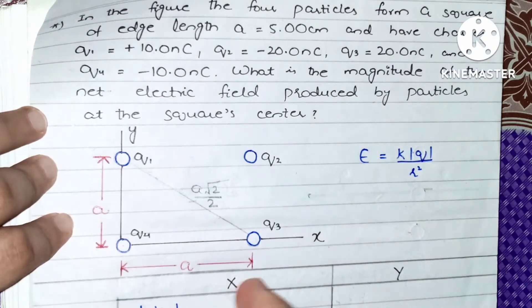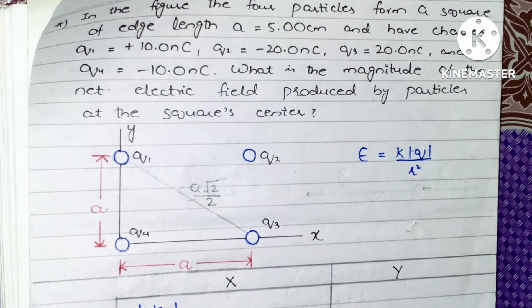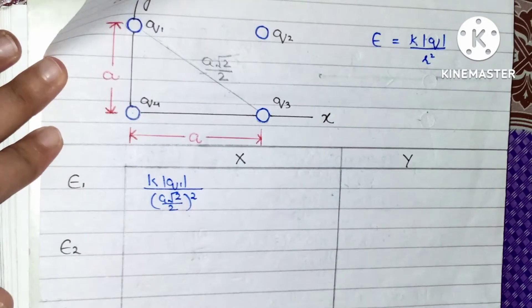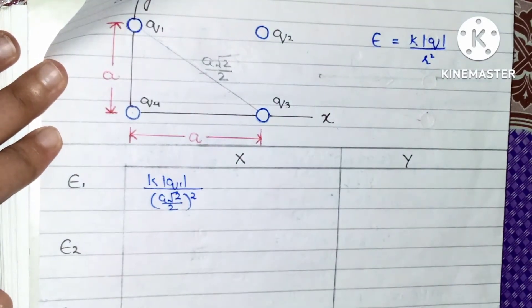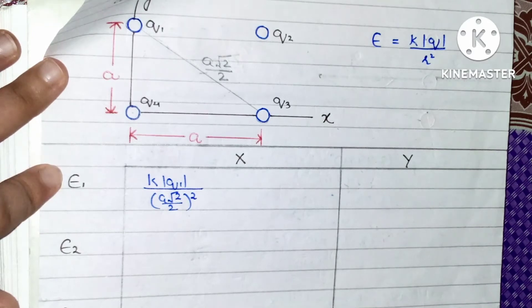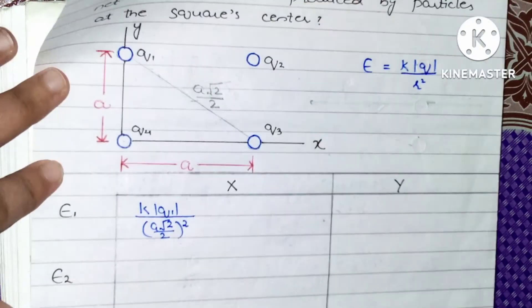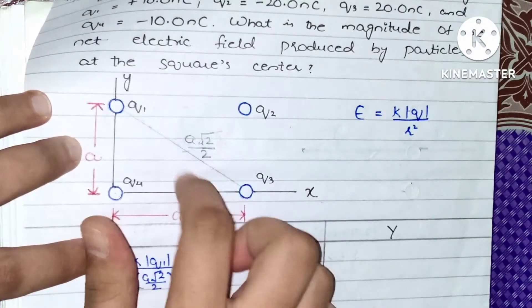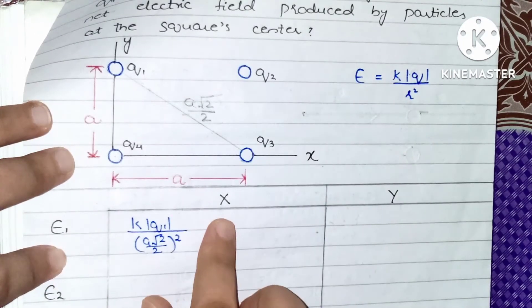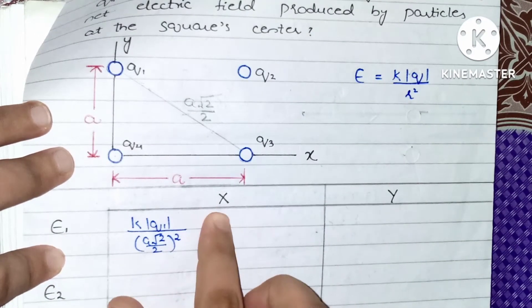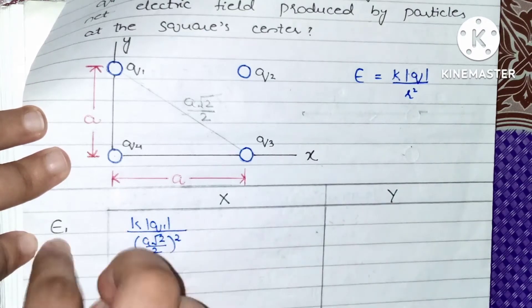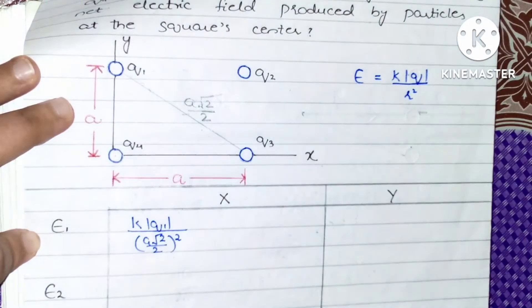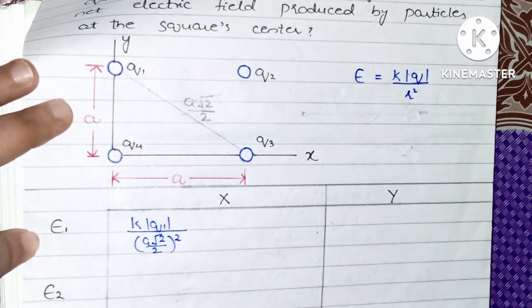Now we have four charge particles, so we have to find the electric field four times. For charge particle q1, I have substituted the values: kq1 over r² — that is this distance. Now we need to know the x-component and the y-component of E1, the field produced by charge q1.